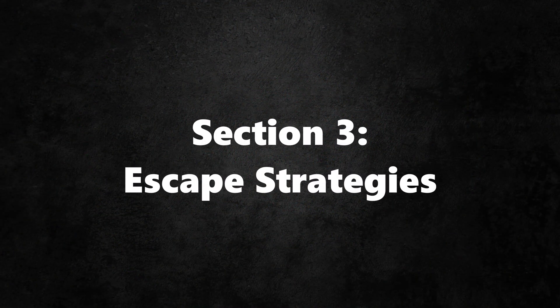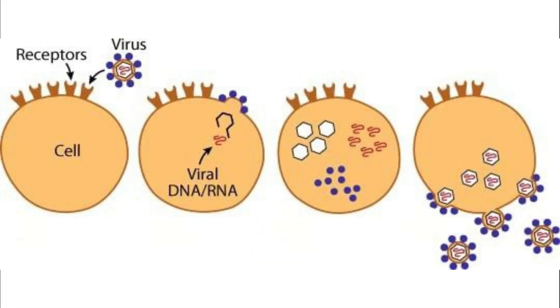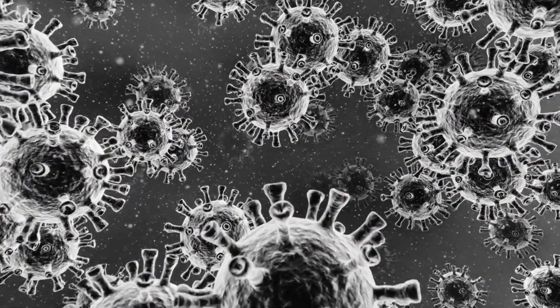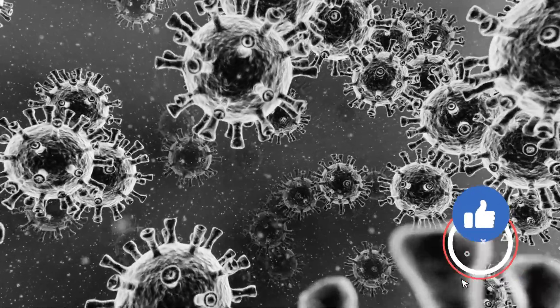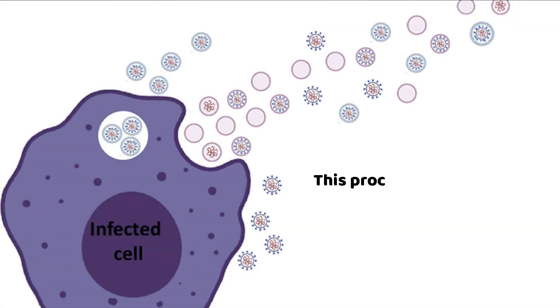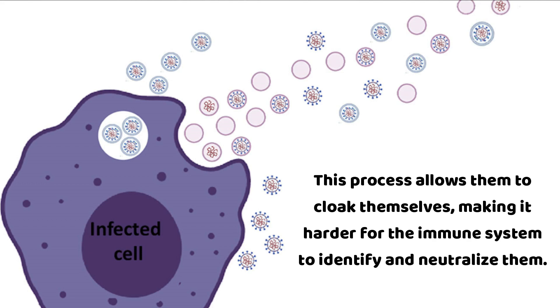Section 3: Escape Strategies. As the number of viral particles multiplies within the host cell, the pressure on the cell's structure increases. Some viruses have sophisticated escape strategies, where they can bud off from the host cell, acquiring a piece of the cell membrane as they exit. This process allows them to cloak themselves, making it harder for the immune system to identify and neutralize them.